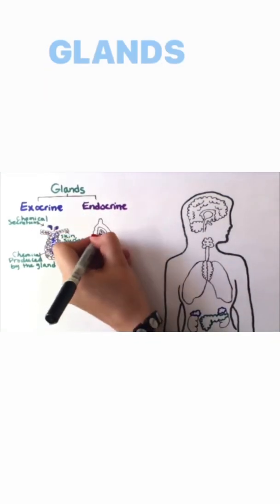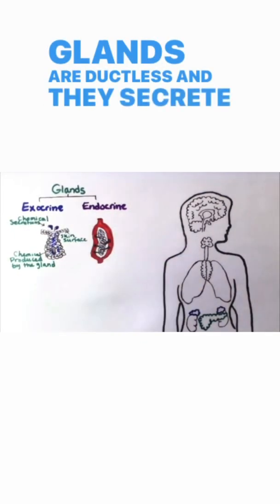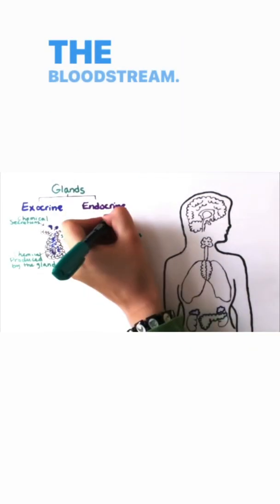On the other hand, endocrine glands are ductless, and they secrete hormones directly into the bloodstream.